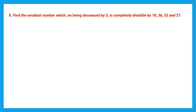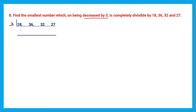Next question: Find the smallest number which on being decreased by 3 is completely divisible by 18, 36, 32 and 27. We have to find the LCM first, and remember this is decreased by 3, so we will handle that at the end. Starting with 3: 3 sixes are 18, 3 twelves are 36, bring down 32, 3 nines are 27.